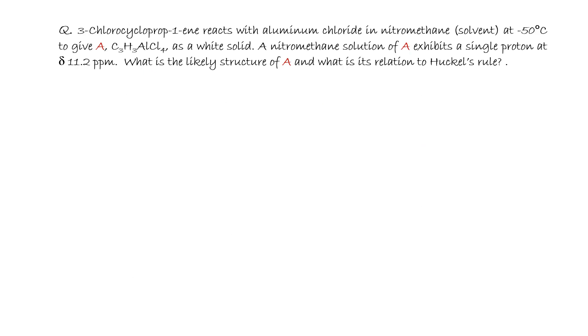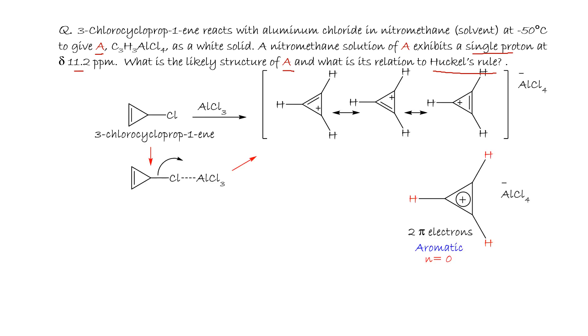3-chlorocycloprop-1-ene reacts with aluminum chloride in nitromethane as a solvent at -50°C to give compound A, with molecular formula C₃H₃AlCl₄, as a white solid. A nitromethane solution of A exhibits a single proton at 11.2 ppm. What is the likely structure of A and what is its relation to Huckel's rule?